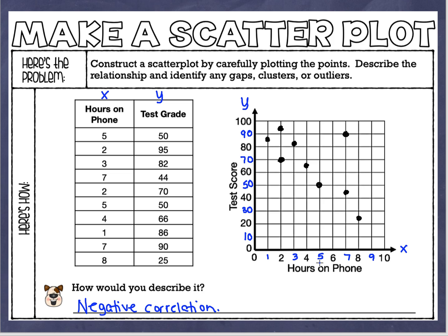Now I want to look and see if I see any gaps, outliers, or clusters. When I look at this graph, I see one outlier. This point right here looks really out of place — an outlier is kind of like an outsider, it just doesn't really belong. Everything else is going in a nice line from left to right, but then we've got this outlier up here. This is a person who spent seven hours on the phone and still got a 90, so it's not falling in with the trend. There's an outlier at (7, 90).